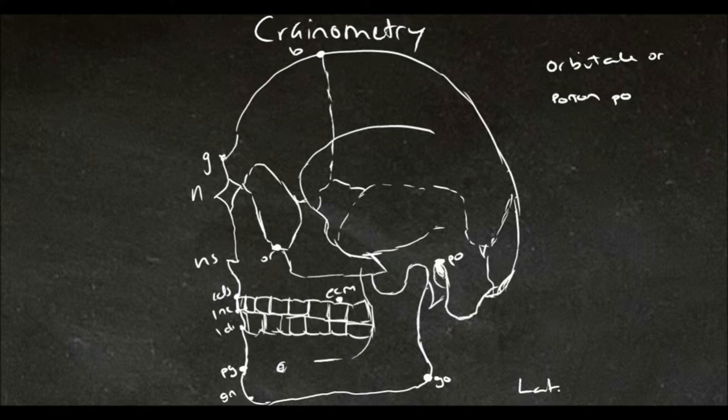The left and right porion, along with the left orbitale, help us orientate the skull in its anatomical position, referred to as the Frankfurt plane.